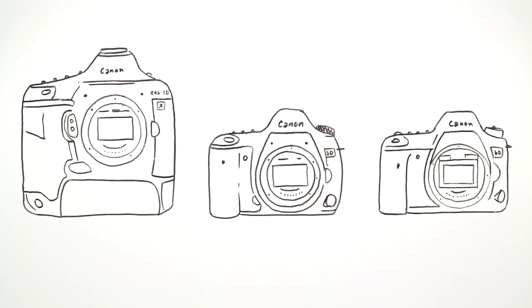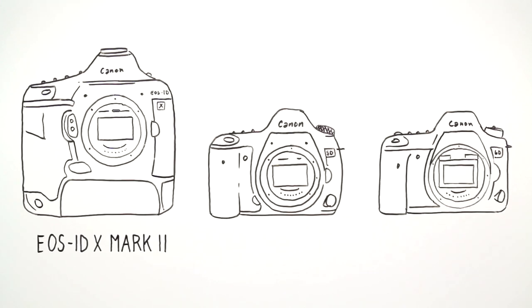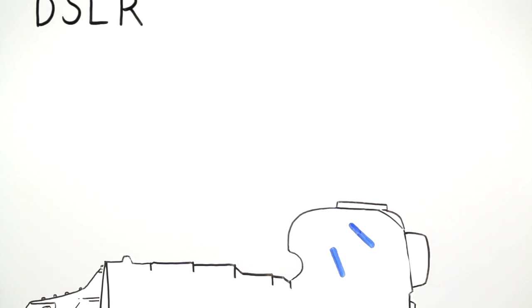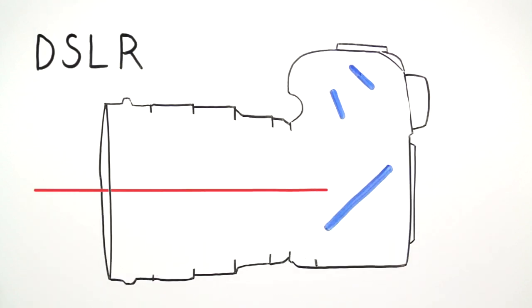Full-frame DSLR cameras include the Canon EOS 1DX Mark II, 5D Mark IV, and 6D Mark II. The DSLR design uses mirrors that reflect the image to an optical viewfinder.